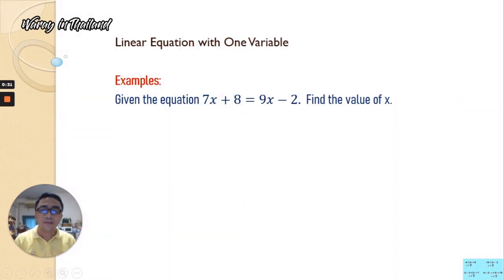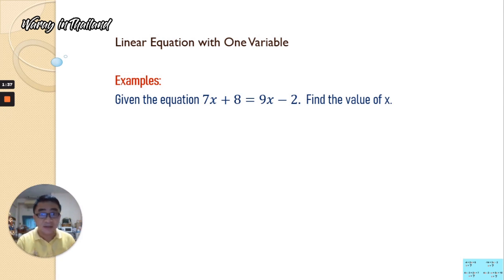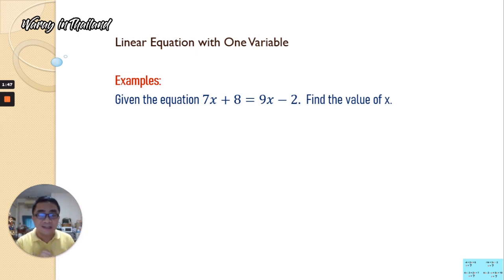Our first example says that given the equation 7x plus 8 is equal to 9x minus 2. Find the value of x. As you can see, each of the expressions on the left and the right-hand side is not a rational expression. So we're simply going to combine like terms — put all the x's on one side and put all the numbers on one side.